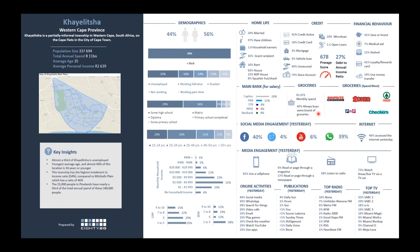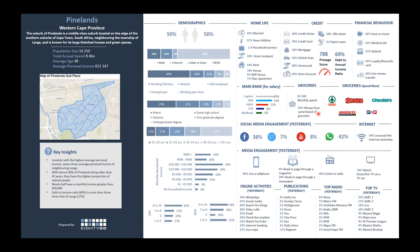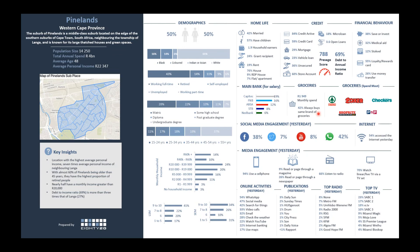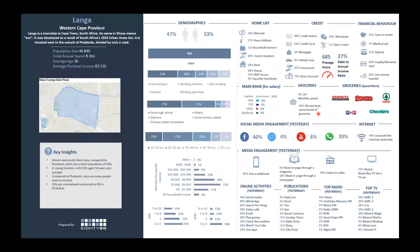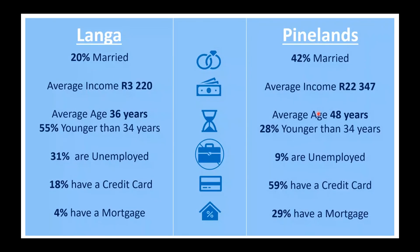What's fascinating is when we've done this at neighborhood level — Thabo Mbeki spoke about South Africa as a land of two nations. The obvious comparison is Pinelands versus Langa: Pinelands 42% married compared to 20%; average income 22,000 versus 3,000; average age 48 versus 36; 9% unemployment versus 31%; 59% have a credit card versus 18%; nearly 30% have a mortgage compared to 4%. That's your obvious Mbeki two-nations comparison.